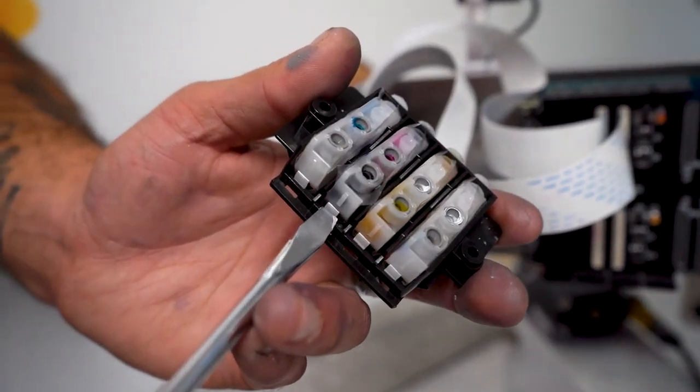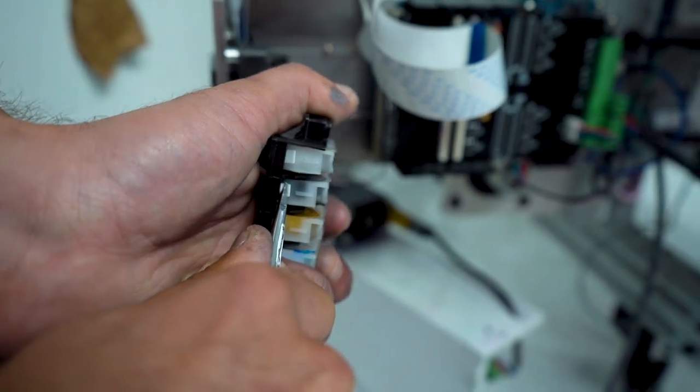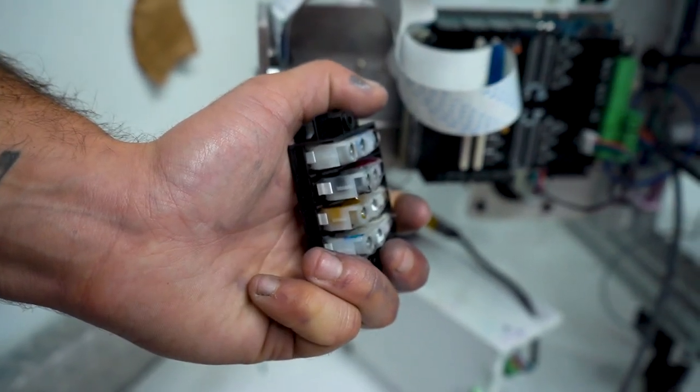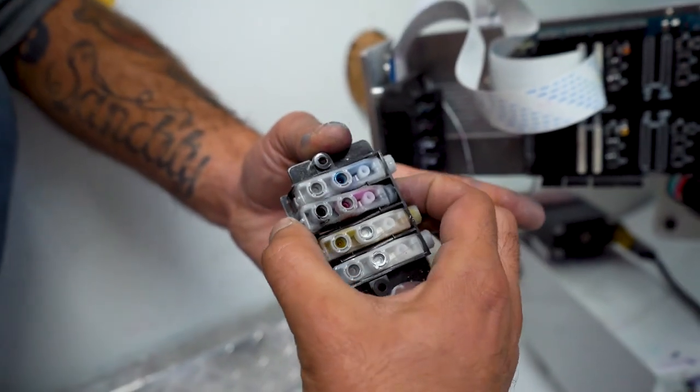Locate the damper to be replaced, then use a flathead screwdriver to push the dampers tab out as shown. Push on the opposite side while wiggling the damper to remove.